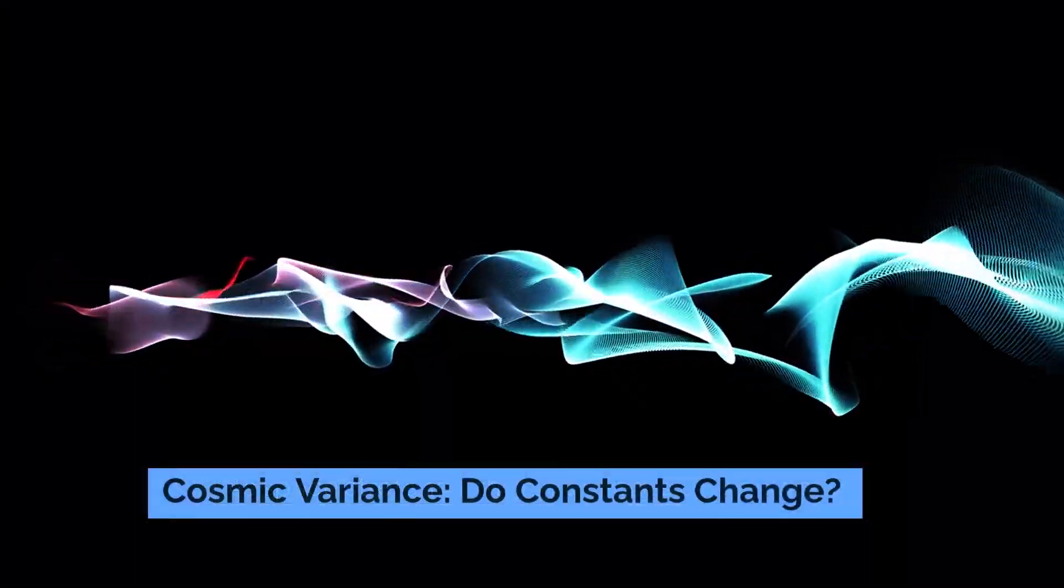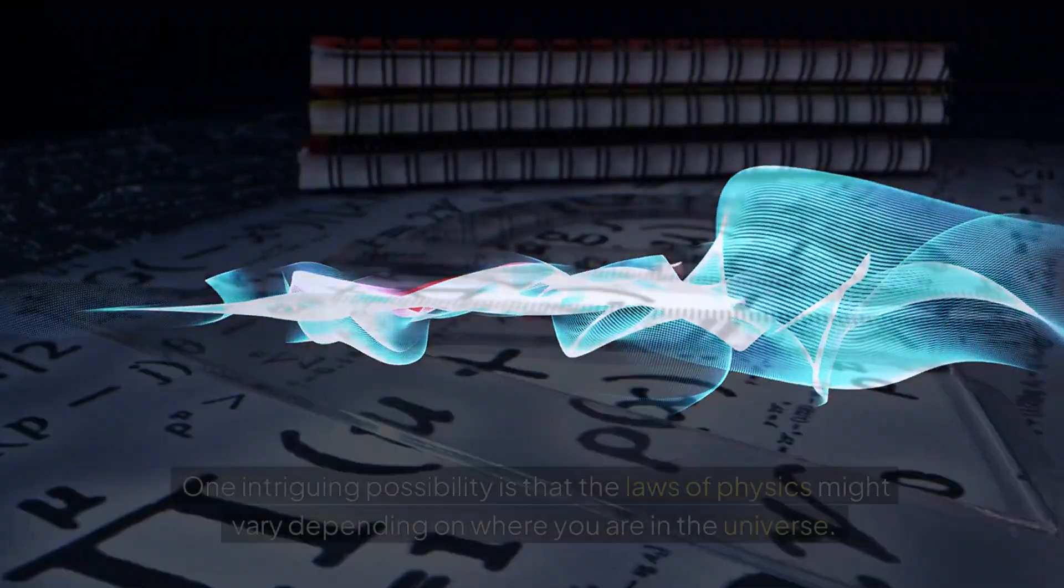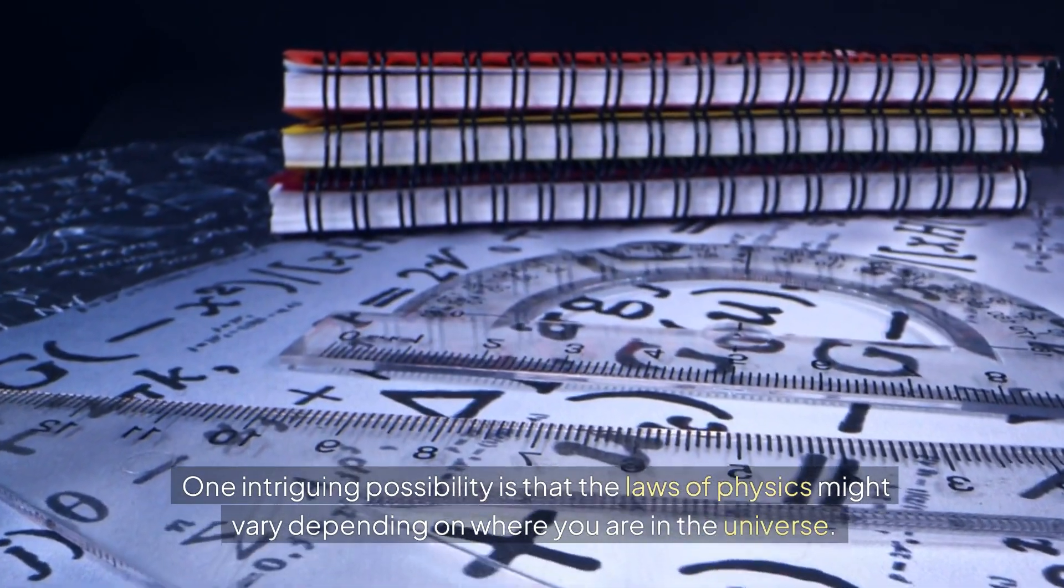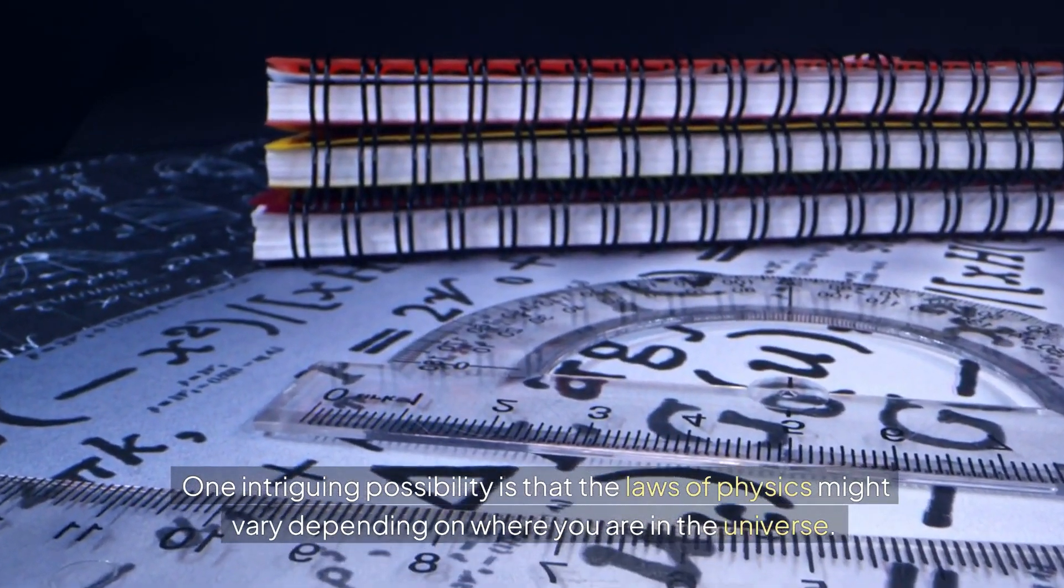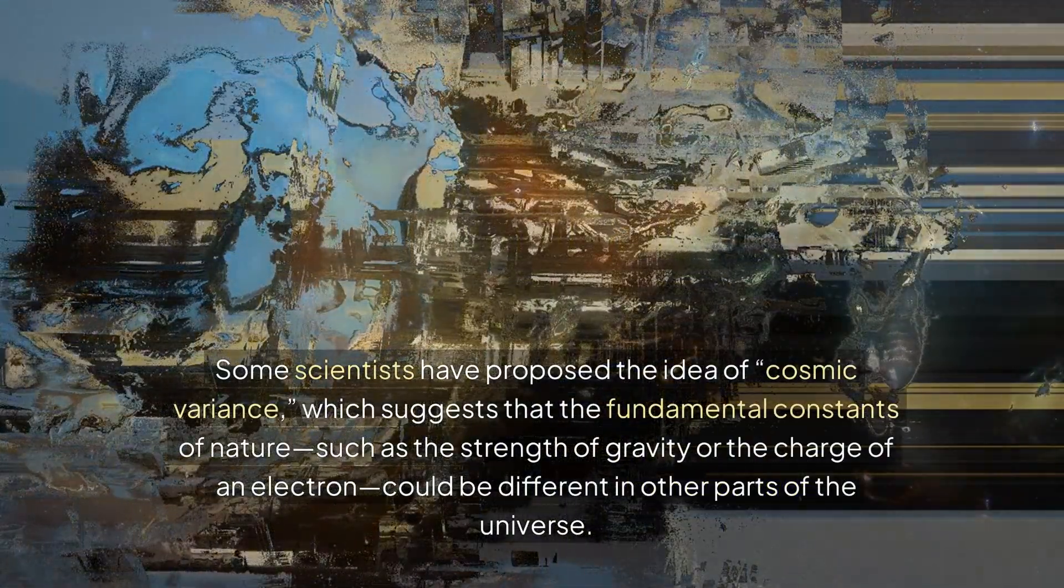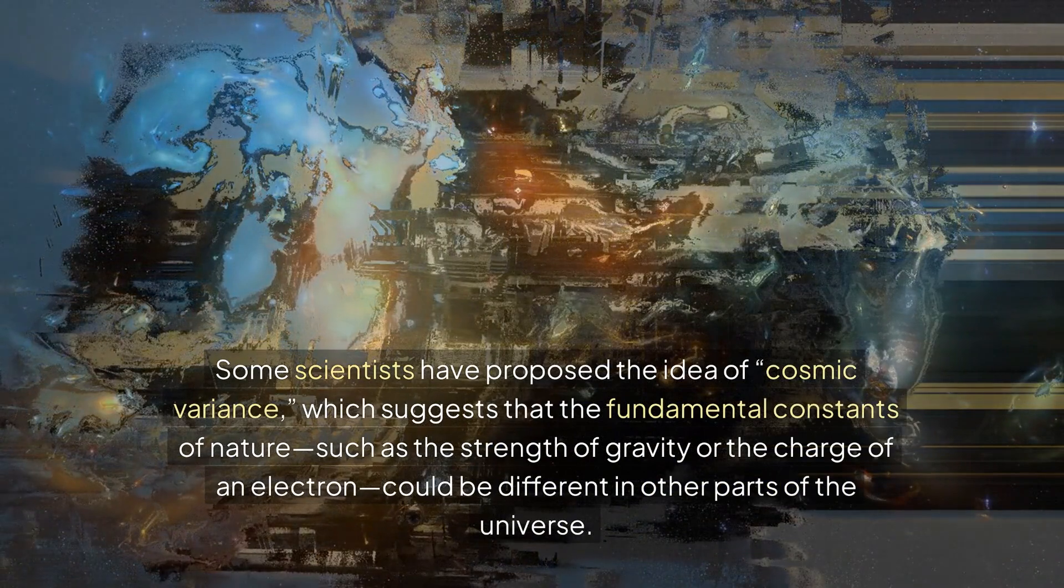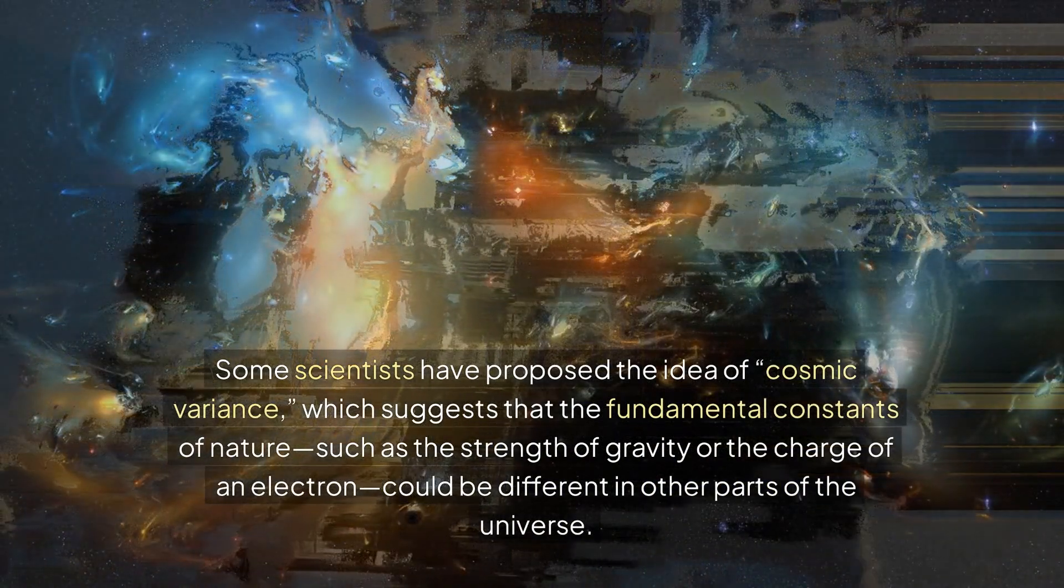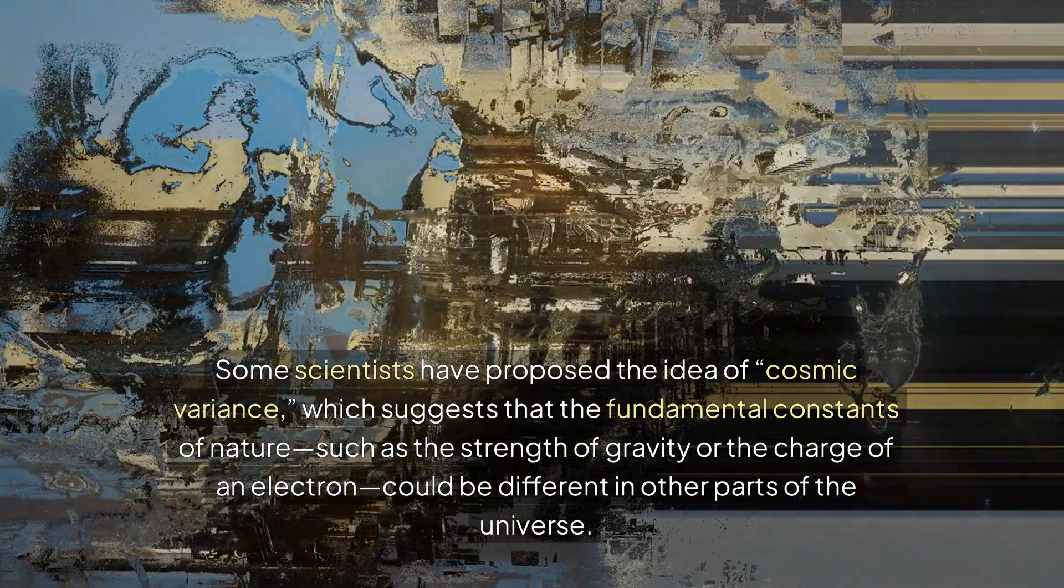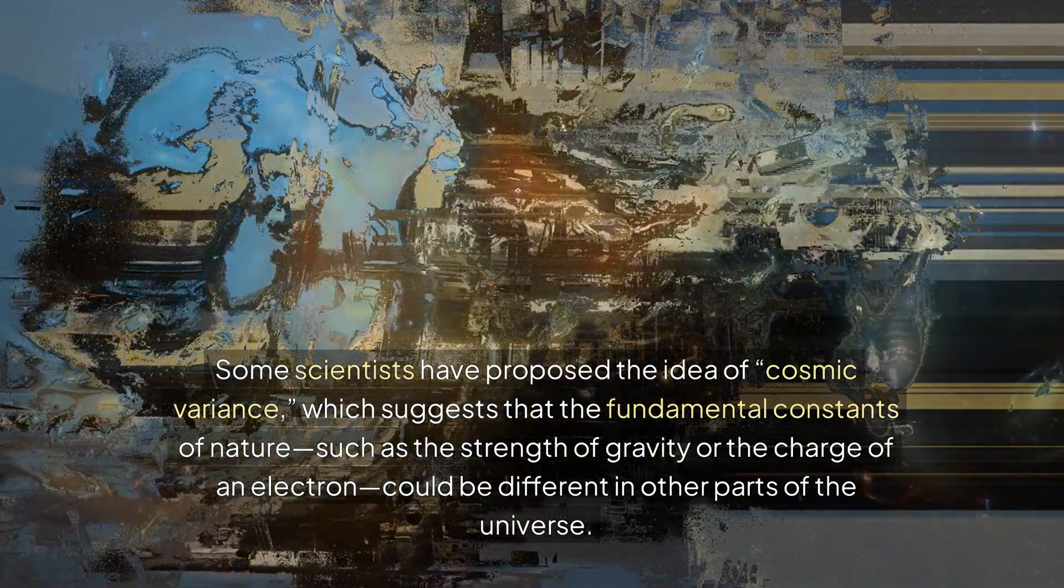Cosmic variance: Do constants change? One intriguing possibility is that the laws of physics might vary depending on where you are in the universe. Some scientists have proposed the idea of cosmic variance, which suggests that the fundamental constants of nature, such as the strength of gravity or the charge of an electron, could be different in other parts of the universe.